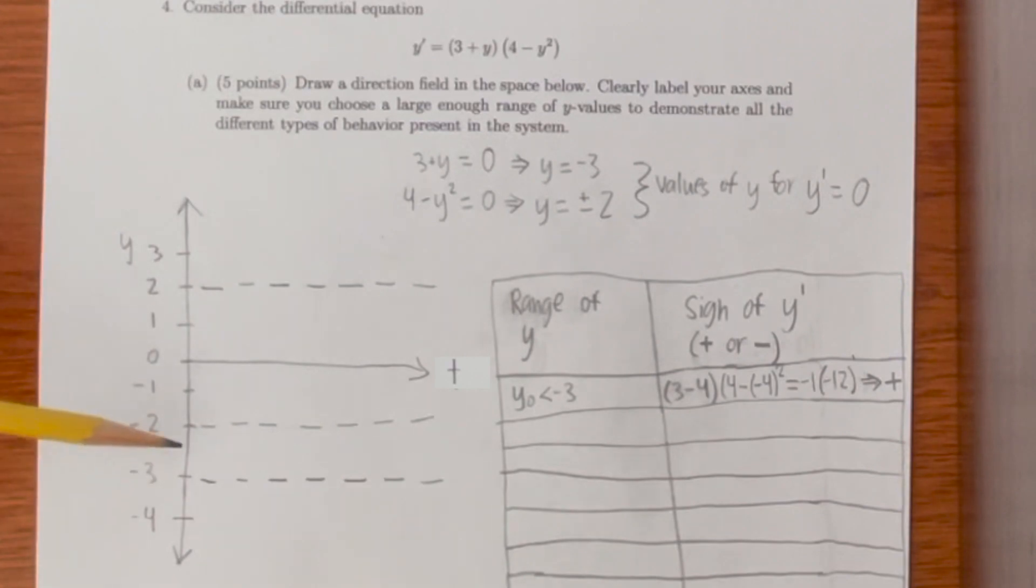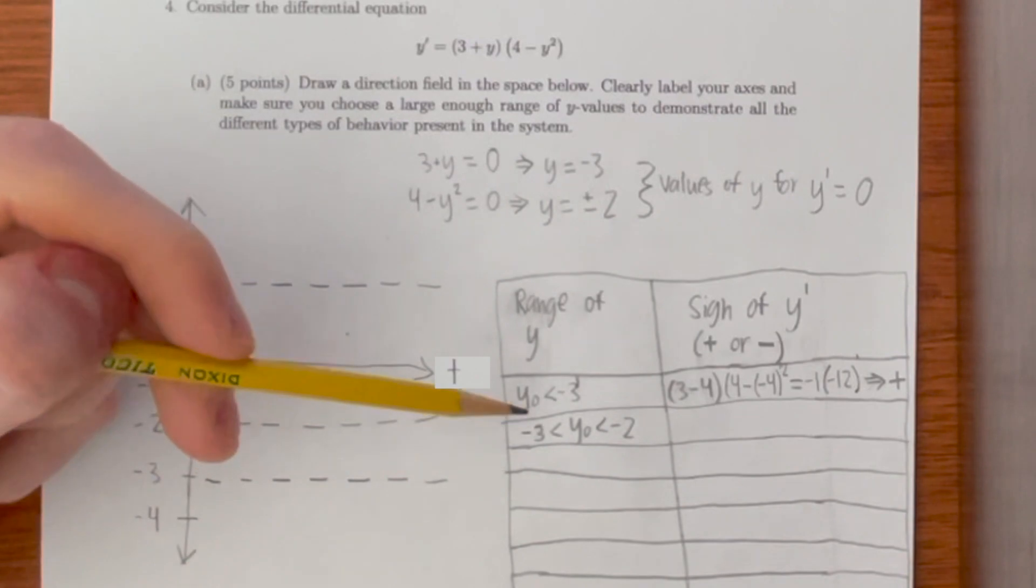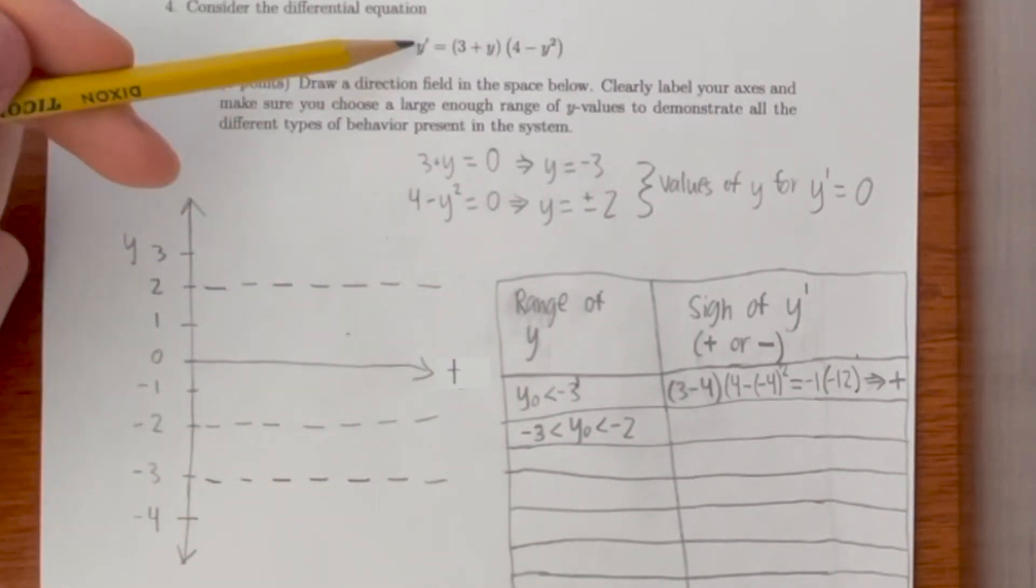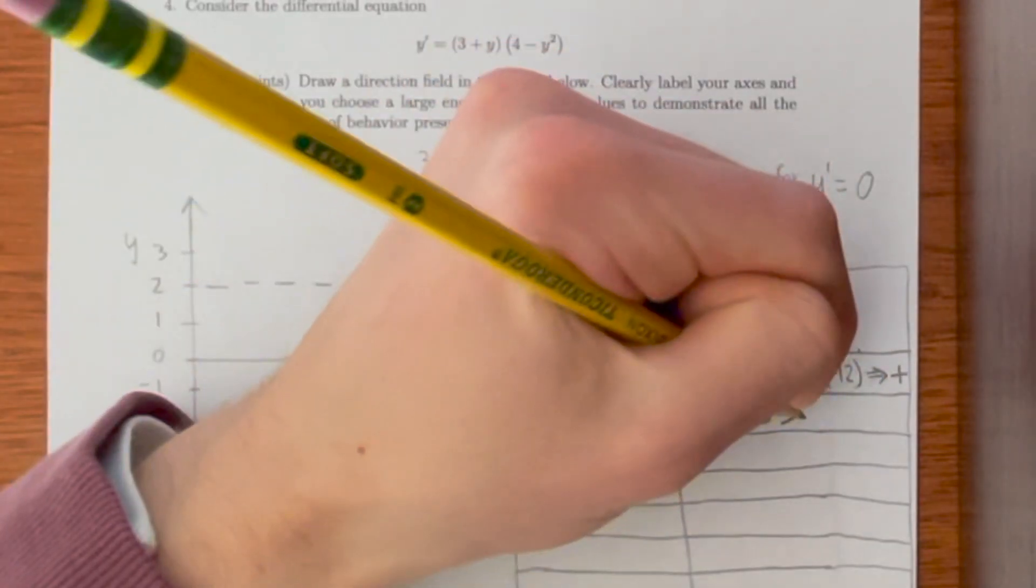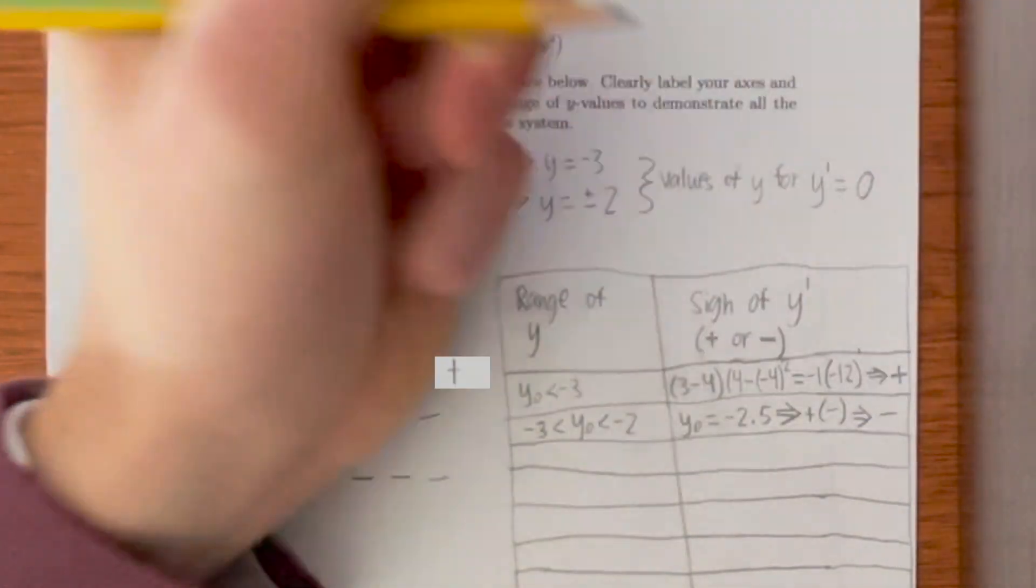Now let's do when y naught is between negative 2 and negative 3. When picking a y naught value between two other values to plug into y prime, pick the mean between its bounds, in this case negative 2.5. This is still going to be a positive value, this is going to be a negative value, so a positive times a negative makes it a negative value.